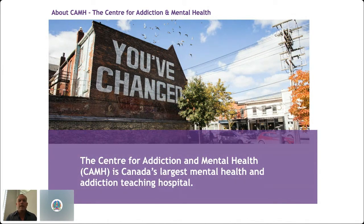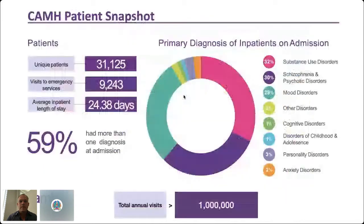The Kremble Center for Neuroinformatics is embedded within the Center for Addiction and Mental Health — Canada's largest mental health and addictions teaching hospital. We're here in Toronto, Canada. CAMH sees quite a variety of patients: over a million visits per year, over 30,000 unique patients, and a broad range of diagnoses including substance use disorders, schizophrenia and psychotic disorders, mood disorders, and a lot of comorbidity.